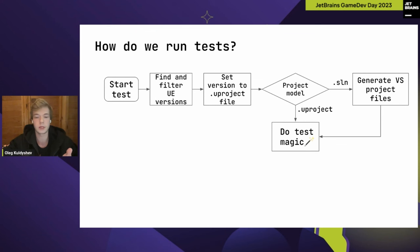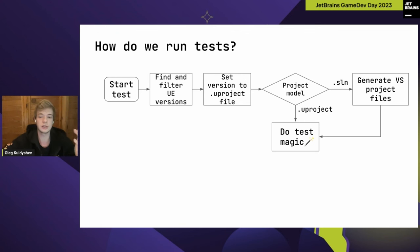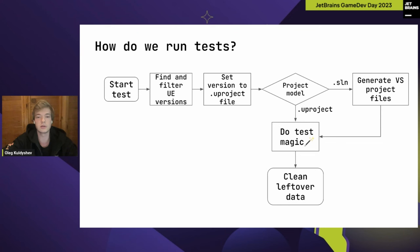If the test is opening the project directly via the project file, we just run tests immediately since project files are generated automatically during project loading in this case. After Visual C++ project files are generated — or if they weren't needed — we run the tests. The test then does its magic, either passes or fails, cleans up leftover data, and gets ready for the next run.